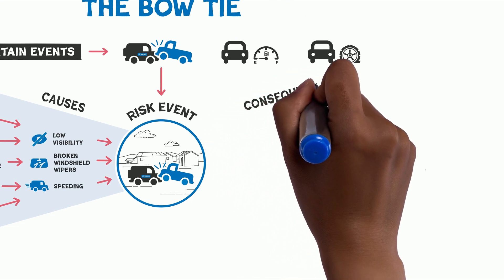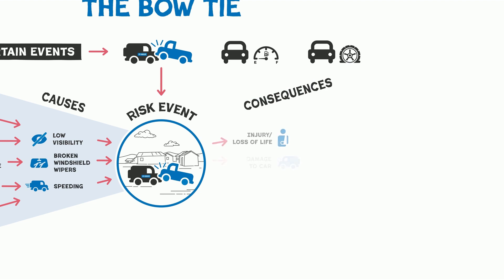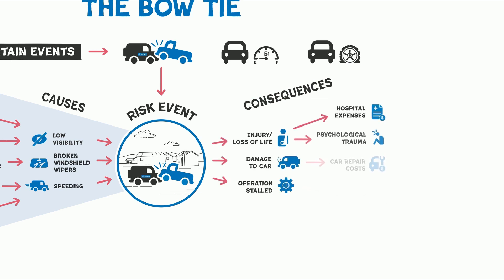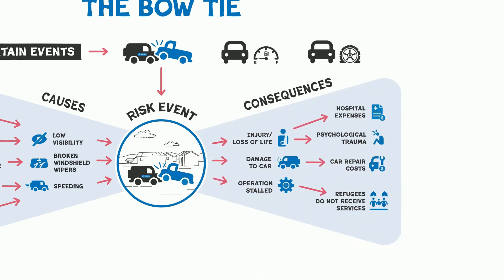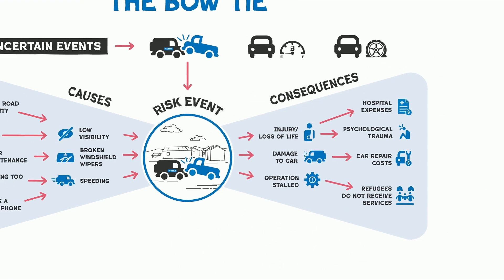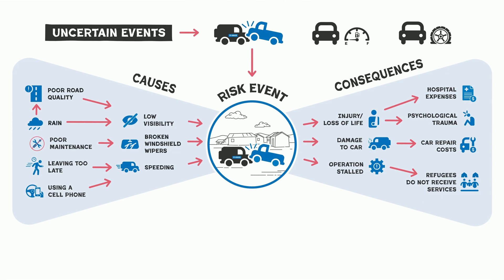Once this step is completed, ask what would be the consequences if the risk event materialized. Record these on the right side of the bowtie diagram. By using this tool, you can then identify the actions that can reduce the likelihood of the risk occurring.